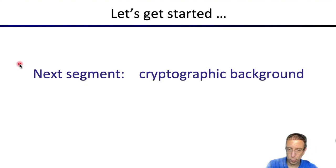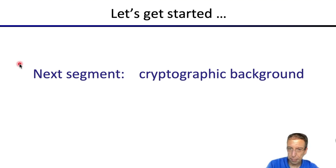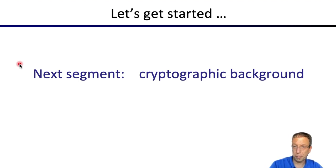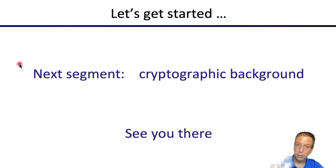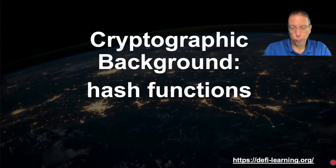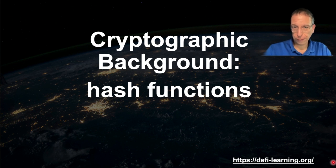The next segment is going to be about cryptographic background — basically the cryptographic primitives needed to understand how a blockchain works. Welcome back everyone. In this segment we're going to look at the cryptographic primitives that are needed to make a blockchain work. Let's dive right in.